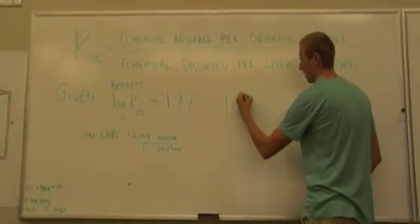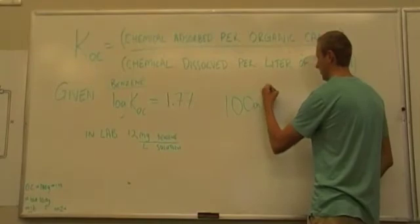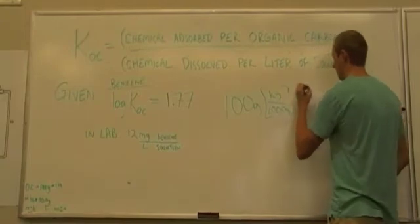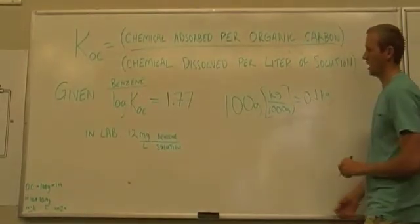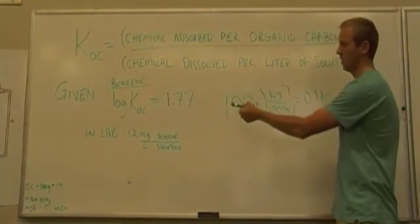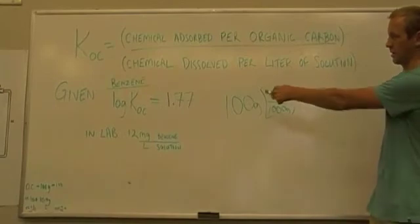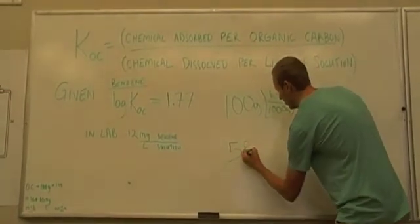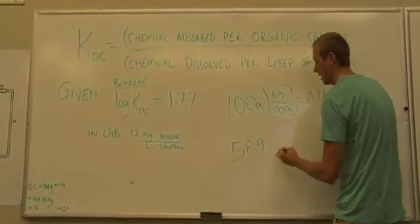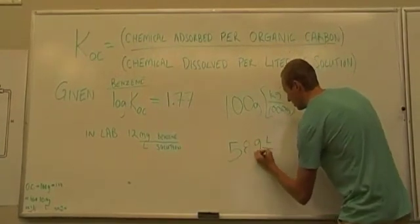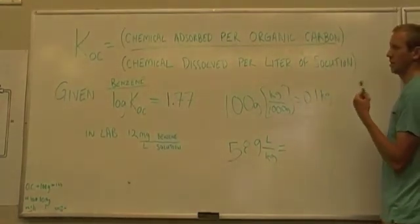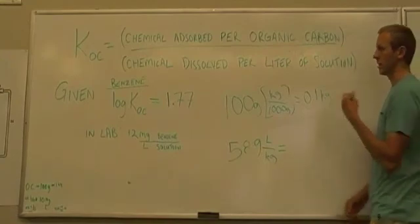Okay, so now having your 100 grams of soil sample, which contains the organic carbon, you convert that into kilograms. So 1,000 grams in a kilogram. So you have 0.1 kilograms. And now you insert it into the equation. So the log of, the antilog of 1.77 is 58.9. And then the units for KOC are liters per kilogram. And then that equals the part of the equation that we're going to be solving for, the amount of chemical absorbed.